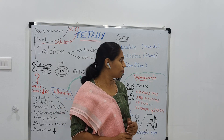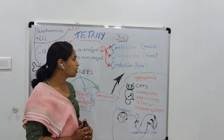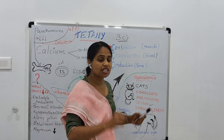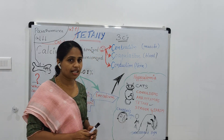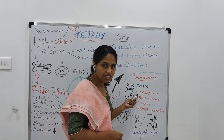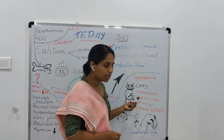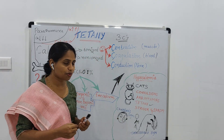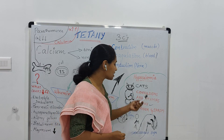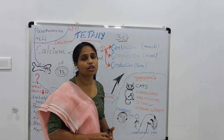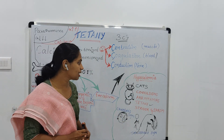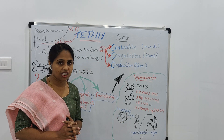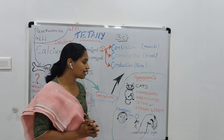The main classical signs of hypocalcemia can be remembered using the mnemonic CATS: C stands for convulsion, A stands for arrhythmia, T stands for tetany, and S stands for stridor or spasm.